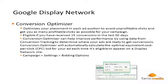Conversion optimizer basically looks at the history of your conversions in AdWords. In order to use this, you have to have had 15 conversions in the last 30 days. Then you can enable it through campaign settings in your bidding options, and you can set a max cost per acquisition. Google will then look at your history and attempt to optimize the placement of your ads.